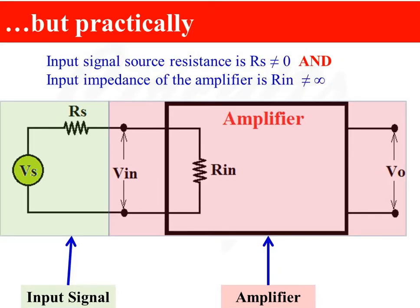But practically, input signal source resistance RS is not equal to zero. If you look at the input side, we can see a loop which consists of voltage source VS, source resistance RS, and input resistance of the amplifier RIN. So RS and RIN form a voltage divider network.